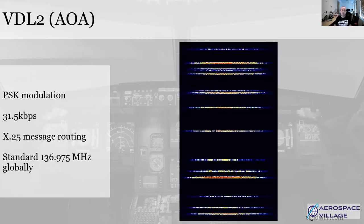VHF Data Link 2 — VDL2 — is an enhancement that uses phase shift keying modulation to give a slightly higher bandwidth throughput. It also uses the X.25 routing protocol to send messages between data terminals, which roughly matches up with the lowest three layers of the OSI model, though X.25 predates TCP/IP by some considerable time. Because of the use of X.25 there is a global single frequency, but as with plain old ACARS it's VHF and so still line of sight.